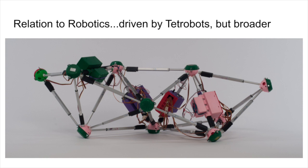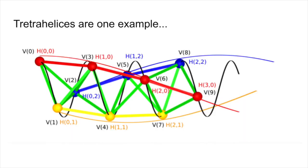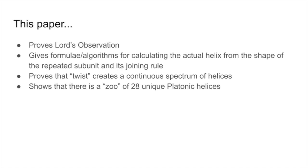This research and the math-a-thon were driven by my interest in robotics, in particular tetrobots created by Dr. Sanderson about 25 years ago. This is a research robot that I made, a seven-tetrahedra robot. This applies to tetrahelices, as you can see diagrammed here, but it also applies to other kinds of structures. This paper proves Lord's observation, gives closed-form expressions or algorithms for calculating the actual helix from the shape of the repeated subunit and its joining rule, and proves that the twist creates a continuous spectrum of helices. And we also show that there is a zoo of 28 unique platonic helixes. Because of the math in this paper, we can calculate the radius and curvature and other features of all of those platonic helices.